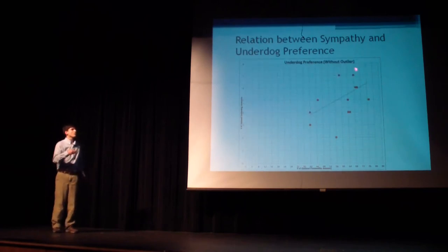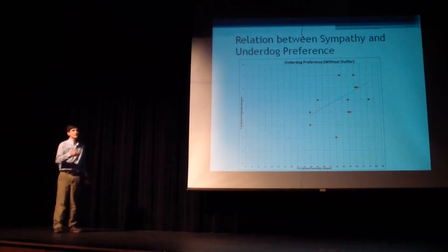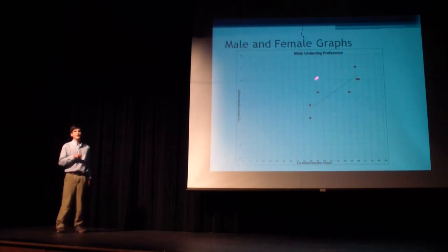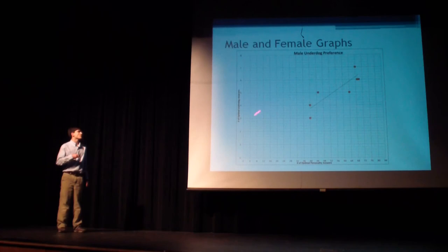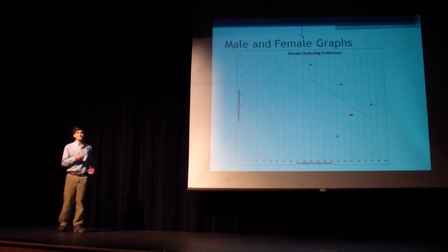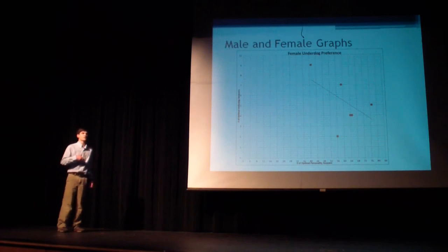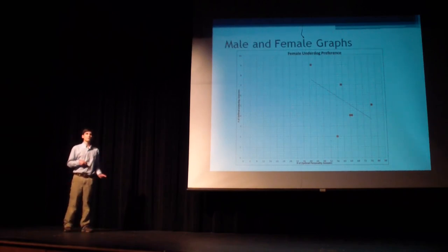After removing an outlier, you can clearly see a correlation between underdog preference and sympathy. I then split the data to compare guys and girls. For guys, people that are less sympathetic are less favorable towards underdogs, and more sympathetic means more favorable towards underdogs. With girls it was a different story — girls more favorable towards underdogs tended to be less sympathetic, and vice versa. I'll leave you to think about that — I don't want to get called a sexist.